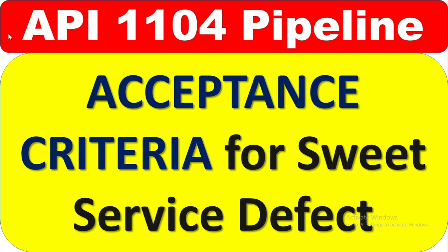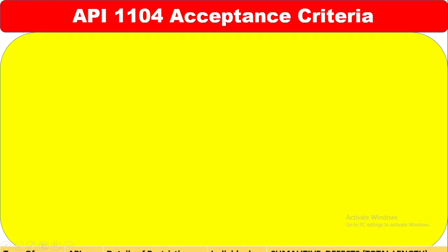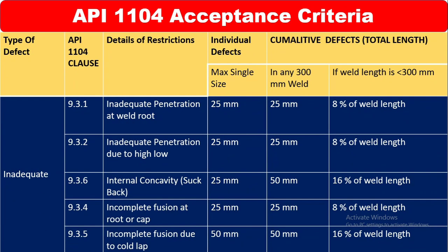In this video you can get all these defects for this particular sweet service defect acceptance criteria. So in one video it covers all these things. Let's start. You can see here the types of defects. There are different clauses in API 1104. Clause 9.3.1 is for details of restriction.